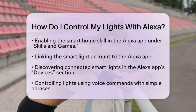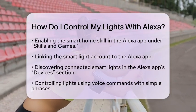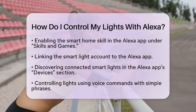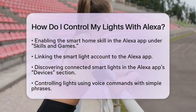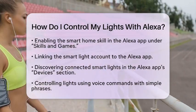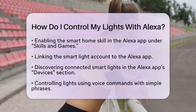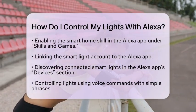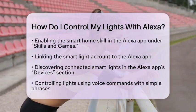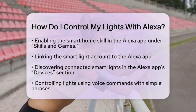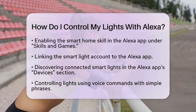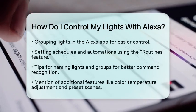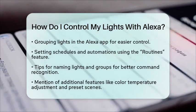To make things even easier, consider grouping your lights. In the Alexa app, create groups by selecting Add Group in the Devices section. You can add multiple lights to a group, like 'living room,' and control them all at once with a command like 'Alexa, turn off the living room lights.'